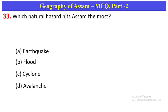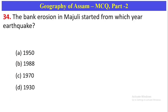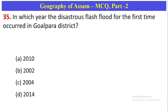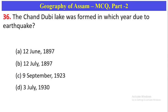Which natural hazard hits Assam the most? The natural hazard is flood — Option B. The bank erosion in Majuli started from which year? Earthquake 1950 — Option A. In which year did flash floods first occur in Guwahati/Goalpara district? Goalpara district received flash floods and it was a seasonal event — Option C.